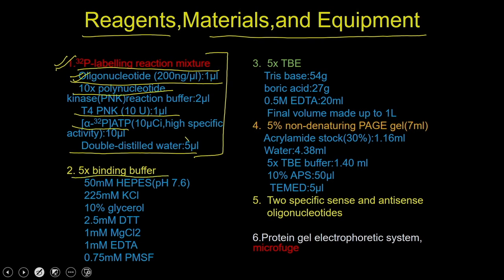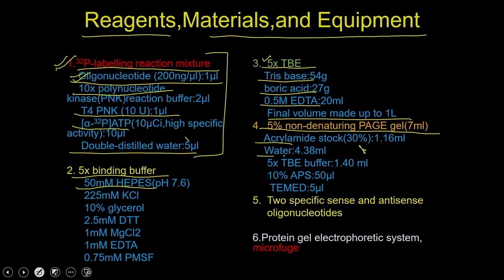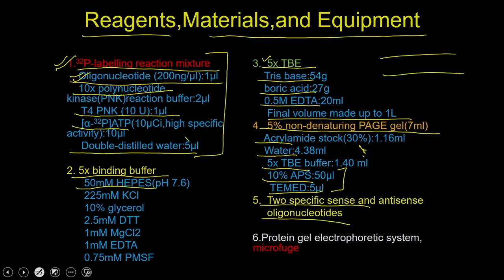You also need a binding assay buffer, whose composition includes buffers, reducing agents, and EDTA to control contaminating metals. For running the gel, a 5x TBE buffer containing Tris, boric acid, and EDTA is made up to one liter. The recipe for the non-denaturing PAGE gel includes acrylamide, water, TBE, APS, and TEMED as the polymerization agents. You also require both sense and antisense oligonucleotides to design the probe.